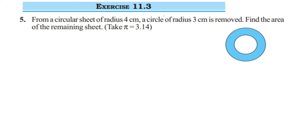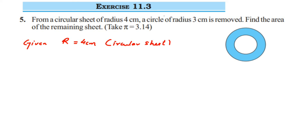The only formula we need is the area of a circle. Let me write down what we know. I'm going to take the outer circle radius as capital R. So given: capital R = 4 centimeters, which is the circular sheet (the outside circle). And small r = 3 centimeters, which is the inner circle.